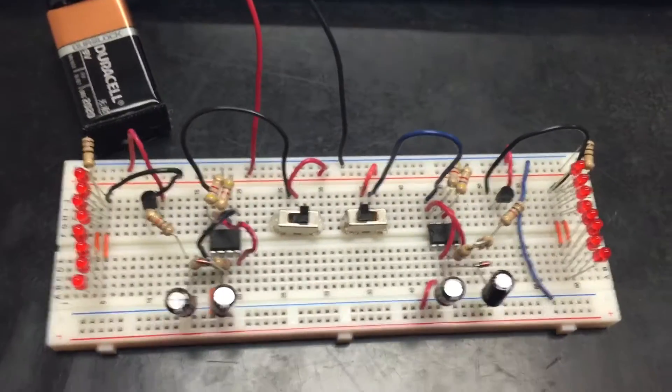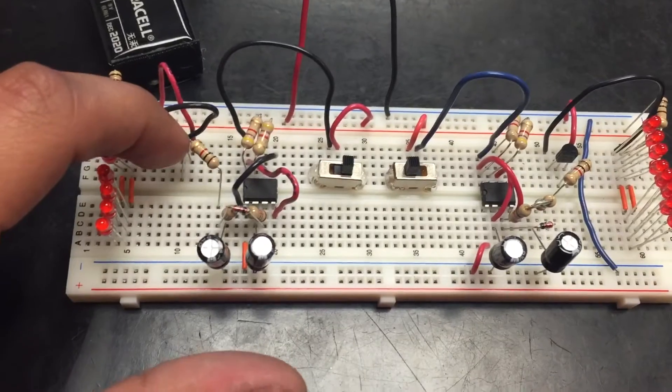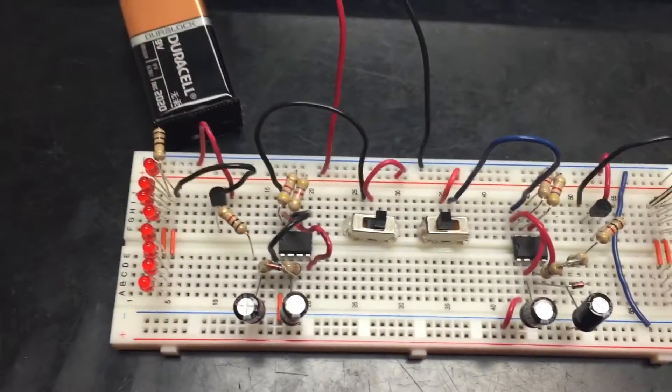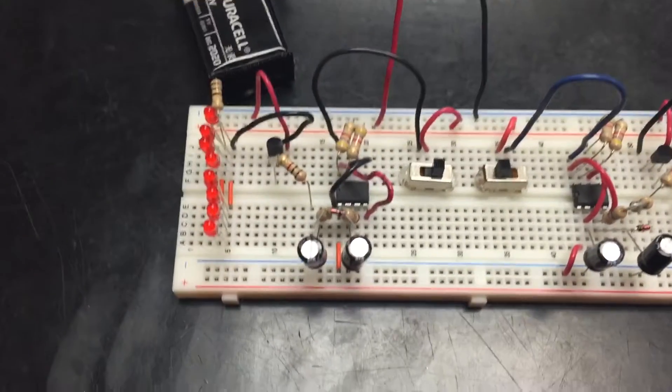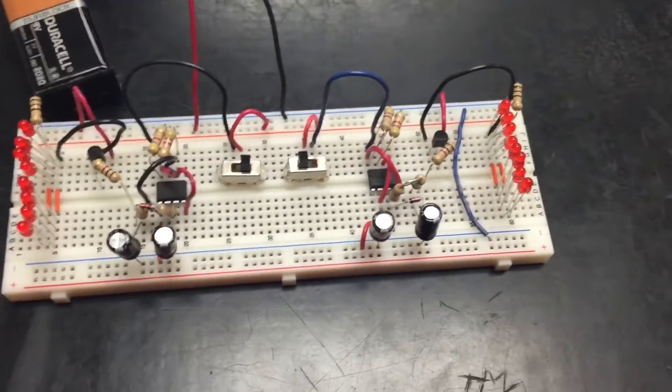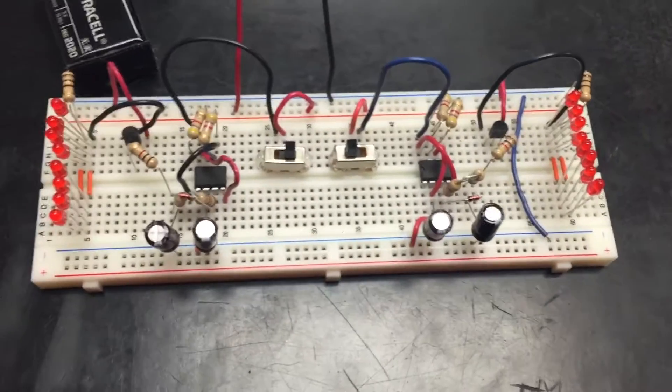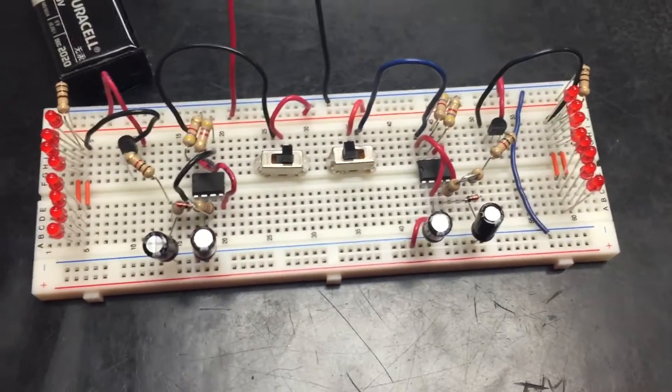This pulse is also the input of this MOSFET right there, which acts as a latch switch and current amplifier, ensuring that the output of the MOSFET is 9 volts when the pulse is high and the output is 0 volts when the pulse is low.